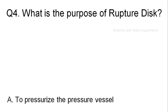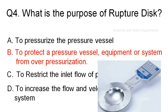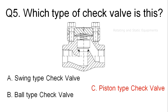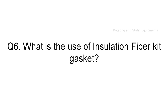Question 4: the correct answer is Option B. The purpose of a rupture disk is to protect a pressure vessel, equipment, or system from over-pressurization. A rupture disk is a sensitive relief device designed to rupture at a predetermined pressure and temperature. Question 5: the correct answer is Option C — piston type check valve.